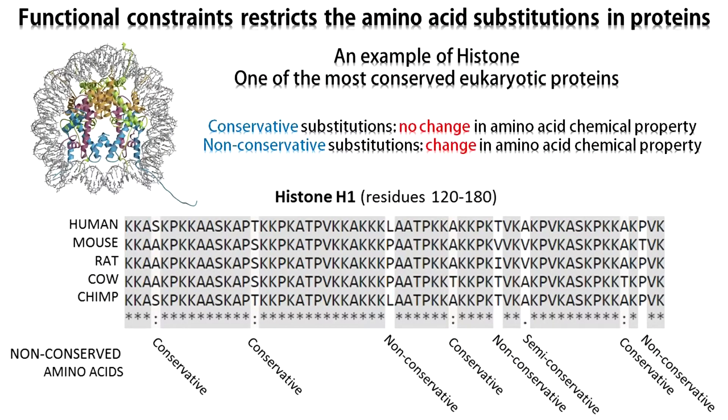Let us take an example of histone protein which is one of the most conserved proteins among eukaryotes. Conserved blocks of alignment column are highlighted in gray. You can see that amino acid substitutions can be conservative, those that involve little alteration of the chemical property, and they can be non-conservative, those that involve alteration of chemical properties.